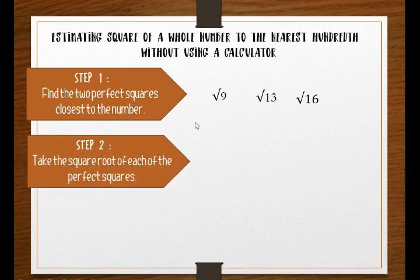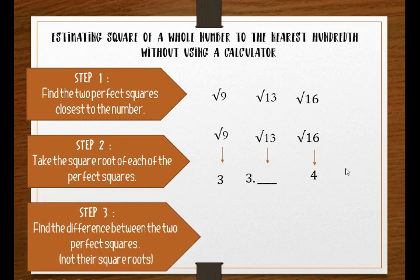Step two: take the square root of each perfect square. The square root of 9 equals 3, and the square root of 16 equals 4. For square root of 13, since this is between square root of 9 and 16, this will be 3 point something. We will not use 4 point something because square root of 16 equals 4 and that is already greater than 13.